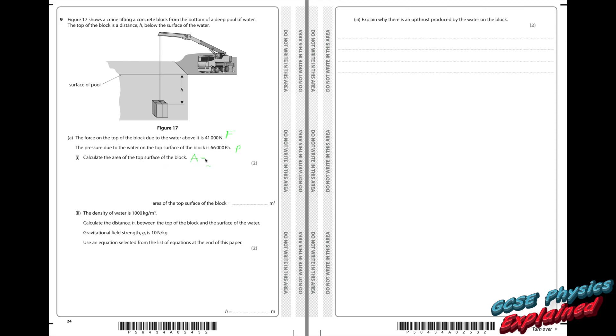So that's our target. Right, what equation do we know that's got force, pressure and area in? Well it's this one. Pressure equals force divided by area. Now let's rearrange that to get the area. So if p equals f over a, that means that a equals f over p.